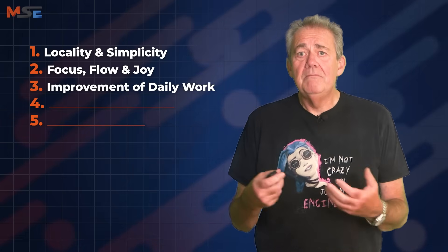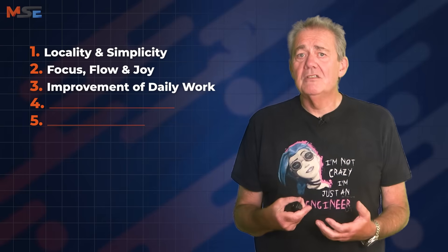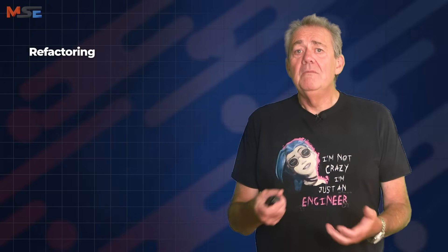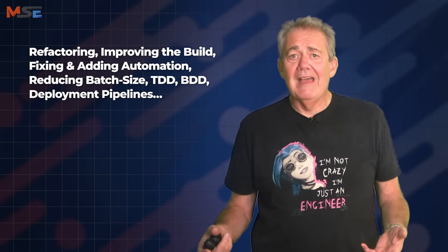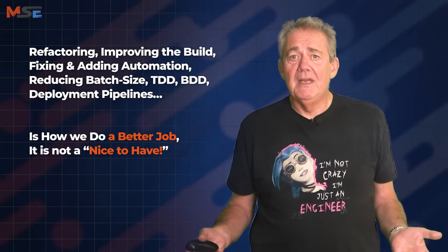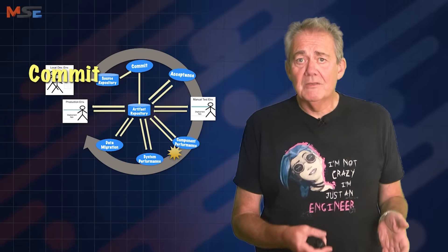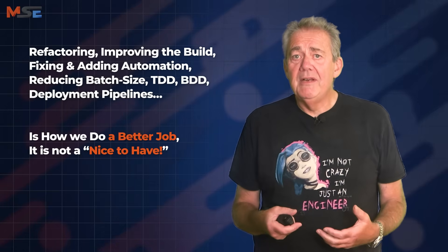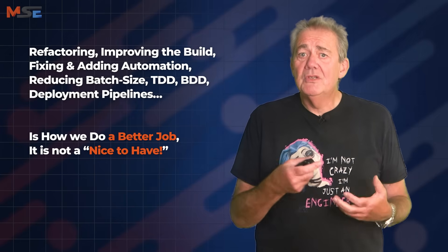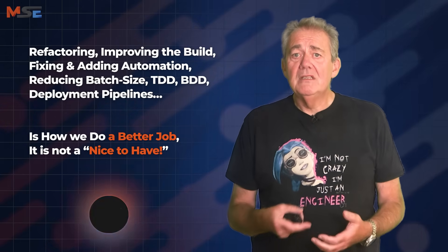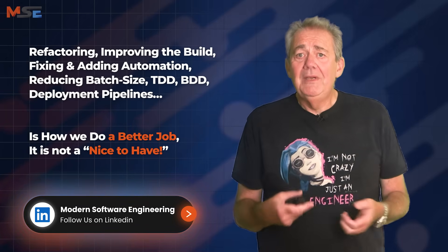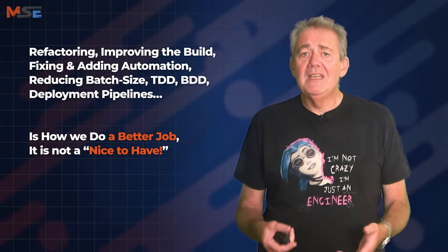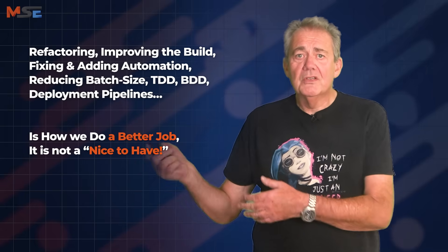The third ideal in Gene's list is improvement of daily work. This may be my favourite because it expresses something I've been banging on about for years: improving the work is the work. In badly run organisations, we treat refactoring, improving the build system, fixing automation, and reducing batch size as nice-to-haves — things to do when we have time to spare. We never have time to spare. In Continuous Delivery, I argue that the deployment pipeline is a first-class product, one that we should invest in continually. In Modern Software Engineering, I describe engineering as a science of managing uncertainty, and the way we do that is through continuous improvement. High-performing teams invest in their capabilities every day, not once a quarter during sustainability initiatives.